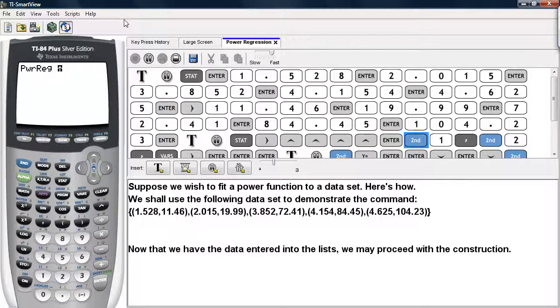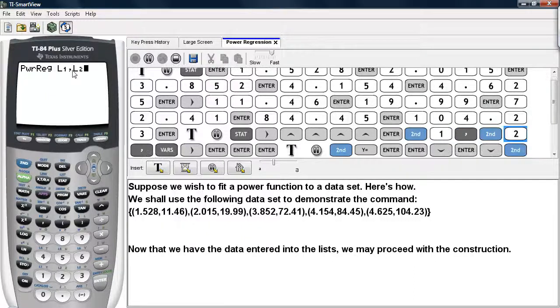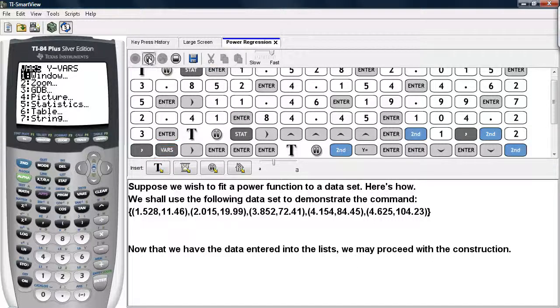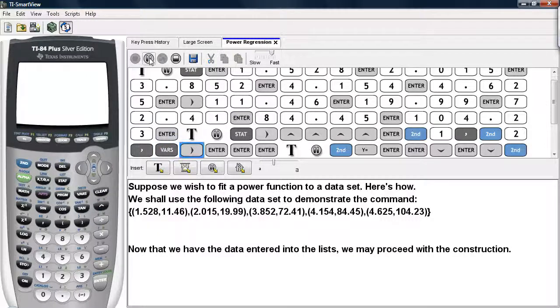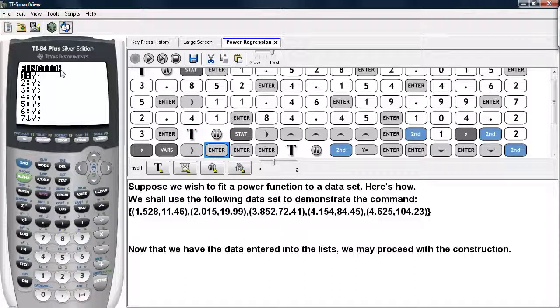And we'll go ahead and tell it to take in L1 as the X coordinates, then we'll type in a comma, and then we'll tell it to take L2 in as the Y coordinates, type in a comma, and then we're going to hit the VARS button. We're going to scroll over to YVARS and we're going to enter in on function and we're going to store the results in the Y1 slot under the Y equals menu.